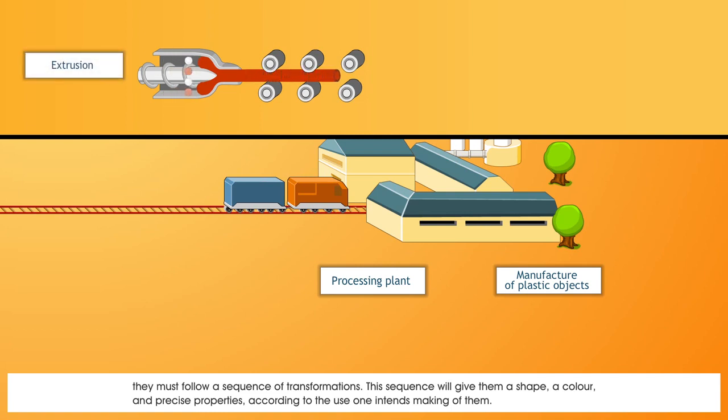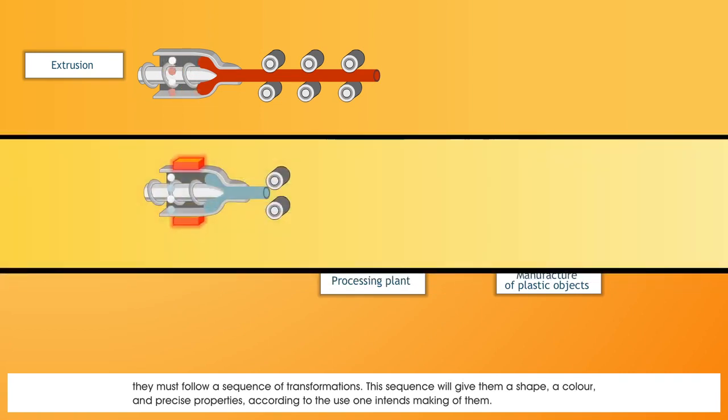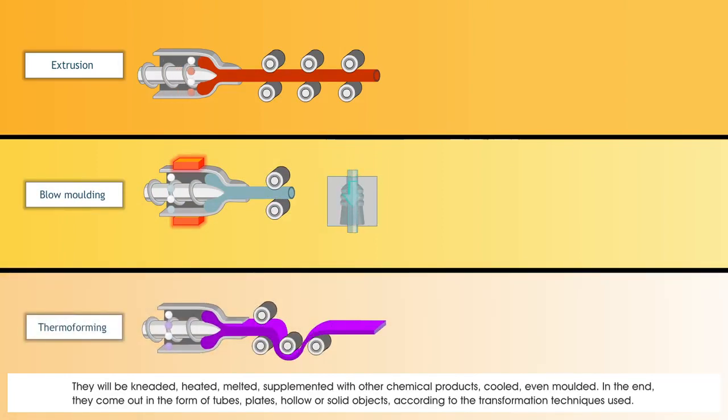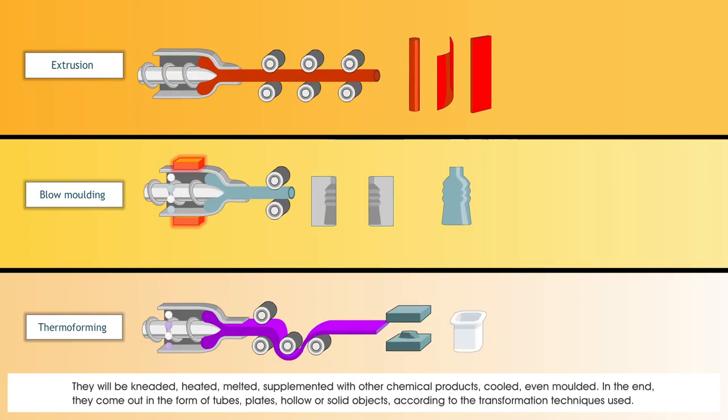This sequence will give them a shape, a colour, and precise properties according to the use one intends making of them. They will be kneaded, heated, melted, supplemented with other chemical products, cooled, even moulded. In the end, they come out in the form of tubes, plates, hollow or solid objects, according to the transformation techniques used.